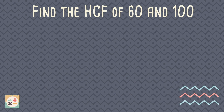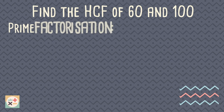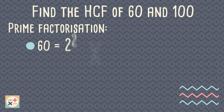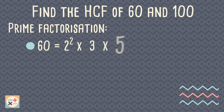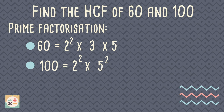We can also use prime factorisation to find the highest common factor. Firstly, write each number as a product of its prime factors. For a refresher on prime factors, check out our video linked above.